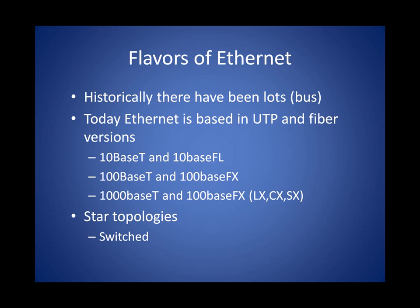The naming convention — for example, 100BaseT — means 100 Mbps baseband transmission using unshielded twisted pair. Now historically, Ethernet has been a bus topology, but today we almost entirely use switched star topologies.